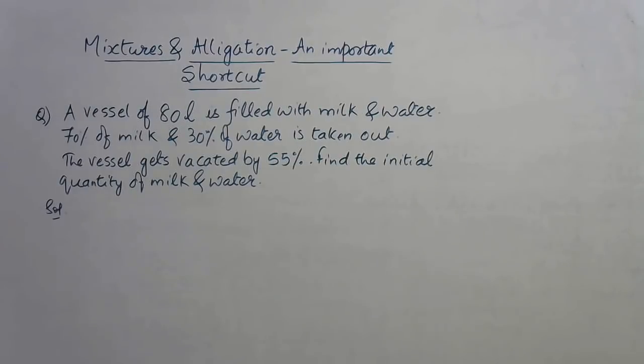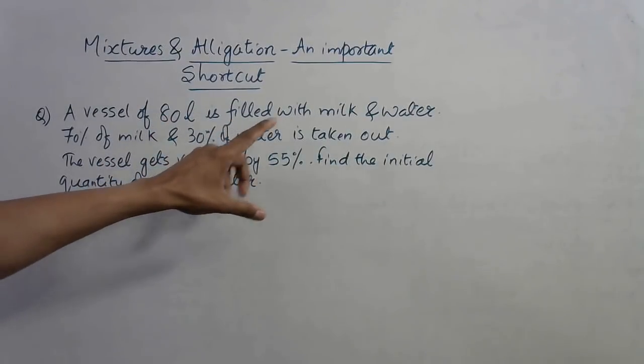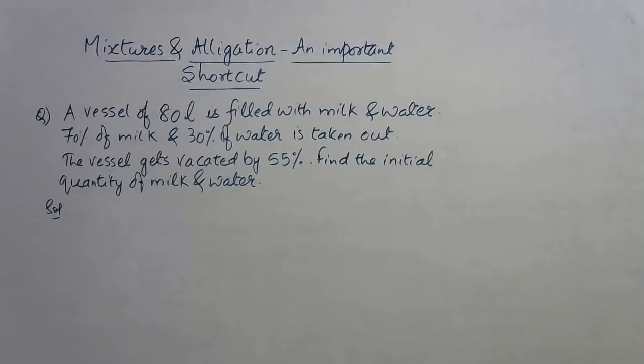The problem goes like this: there's a vessel whose capacity is given, it's 80 liters in this case. It is filled with a mixture of milk and water, so it's completely filled. Some part of it is milk and other part is water.